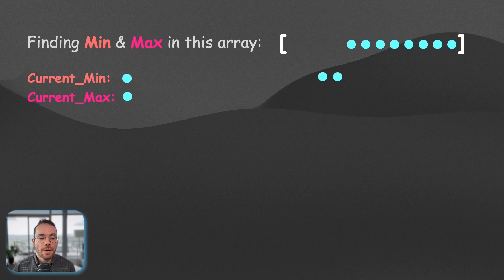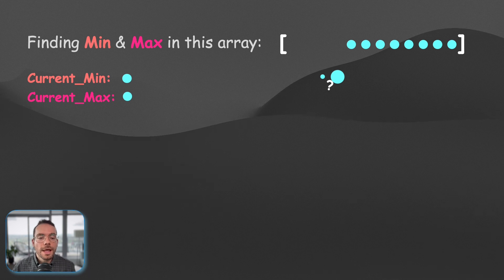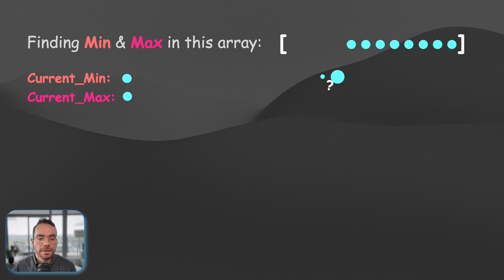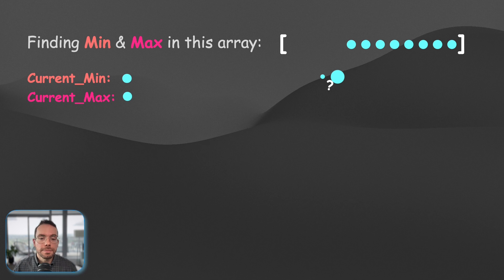So, it turns out one of them is bigger than the other one, and in this case, we will only need to compare the larger element of this pair with the current max and the smaller element of this pair with the current min.